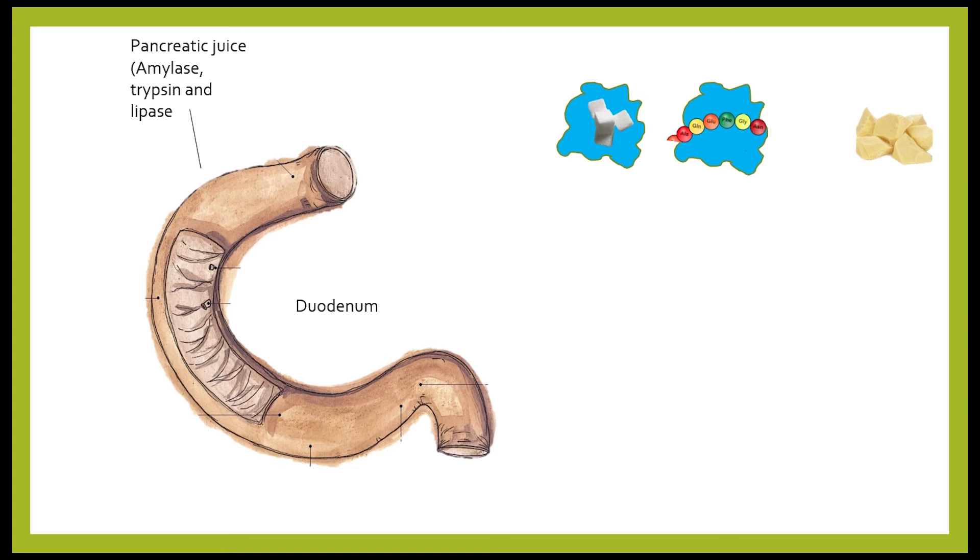In the duodenum, quite a number of new fluids and enzymes are added. The enzymes are all made by the pancreas, which is a cream-colored gland lying just underneath the stomach. A tube called a pancreatic duct leads from the pancreas into the duodenum. The pancreatic juice, which is a fluid made by the pancreas, flows along this tube. The fluid contains several enzymes, including amylase, protease and lipase.